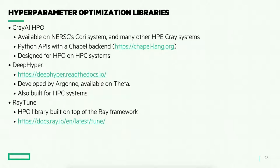So there's a number of tools out there for doing automatic hyperparameter optimization. I've just highlighted three here that I'm most familiar with. There's the CrayAI hyperparameter optimization library developed by HPE and Cray. This is available currently on NERSC's Cori system, also on many other HPE Cray systems. It has Python front-end, Python APIs to interface with the library, and it runs on the back-end using Chapel. This is all compiled down, though you have no need to download Chapel runtimes or anything to run with this. We just utilize Chapel for its high-performance distributed computation and ease of programming. This is designed really for doing hyperparameter optimization on high-performance computing systems, as you would expect from something from Cray. There's also the DeepHyper library developed by Argonne and available on their Theta system, also built for HPC systems, and the RayTune HPO library built on top of the Ray framework, and I've got links here for both of those.